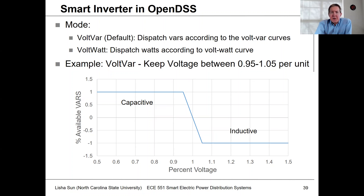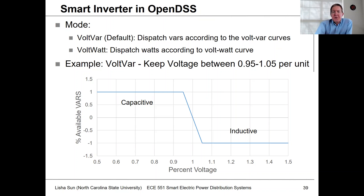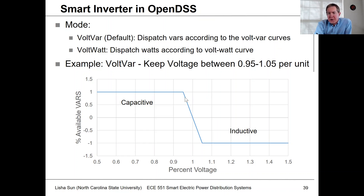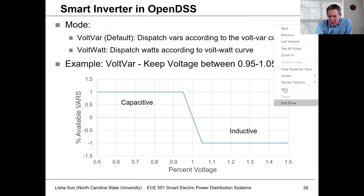We can set this up in terms of having volt-var support through injecting vars to help control voltage. There's also other functionality like a volt-watt curve, where if the voltage gets too high, we can start to curtail output. In this example, we'll choose a simple droop curve for volt-var control, designed to keep voltage between 0.95 and 1.05 per unit.